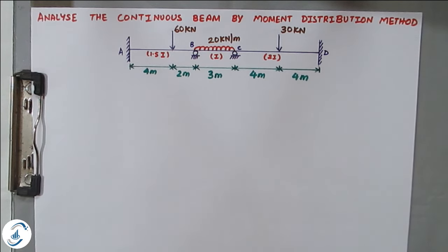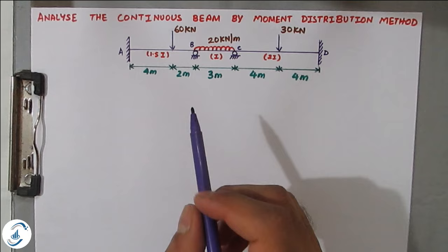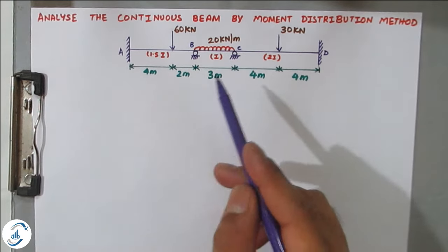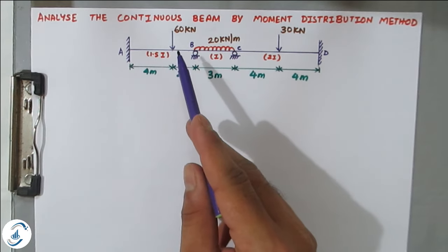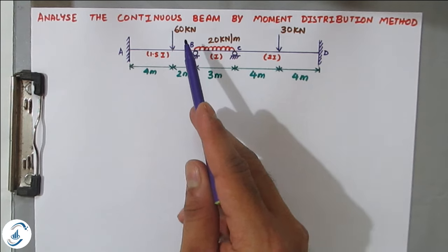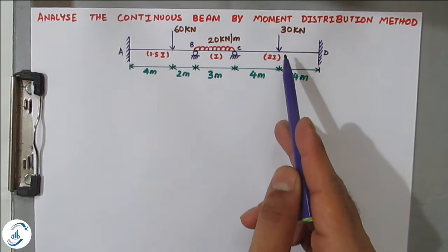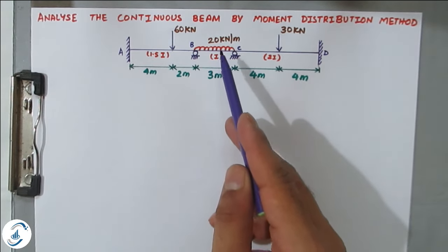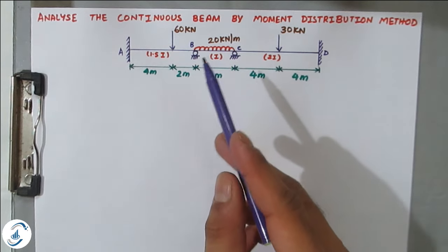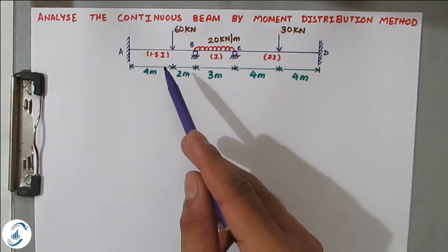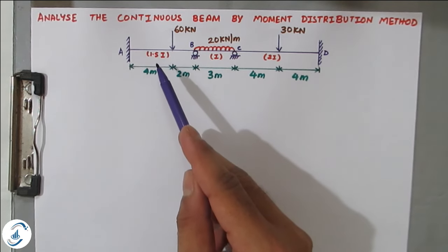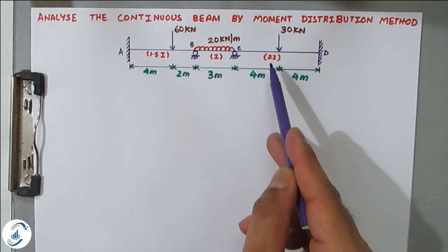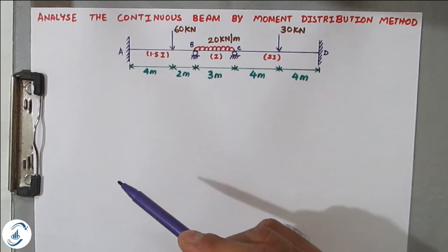In this problem I will show you how to analyze a continuous beam by Moment Distribution Method. Most students find this method very difficult and confusing to arrive at the final moments, so I will try to explain it in the simplest way possible. This is the given beam — it is a three-span beam with a combination of point loads and UDL. In span AB there is a 60 kN point load not at the center, on CD a 30 kN point load at the center, and BC has a UDL of 20 kN/m.